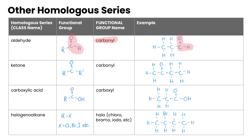Ketones look similar to aldehydes — they have a carbon double-bonded to oxygen, but instead of an alkyl group on just one side, they have alkyl groups on both sides of that carbon connected to the oxygen. Its functional group is also called carbonyl, meaning C double-bonded to O, and you can see in our example the C double-bonded to O attached to two other carbon-containing chains.